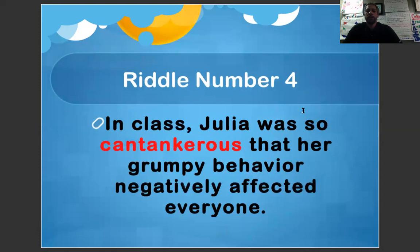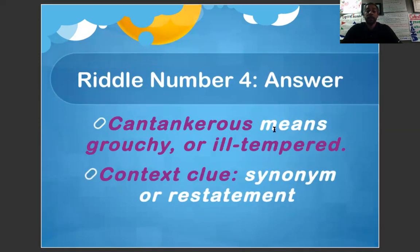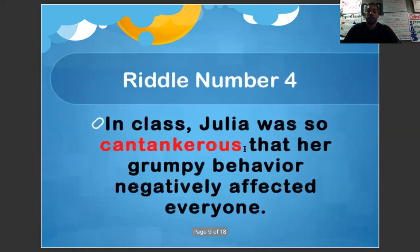Riddle number four. In class, Julia was so cantankerous that her grumpy behavior negatively affected everyone. Cantankerous means grouchy or ill-tempered. Our context clue was a synonym or restatement. Grumpy is a synonym for cantankerous.